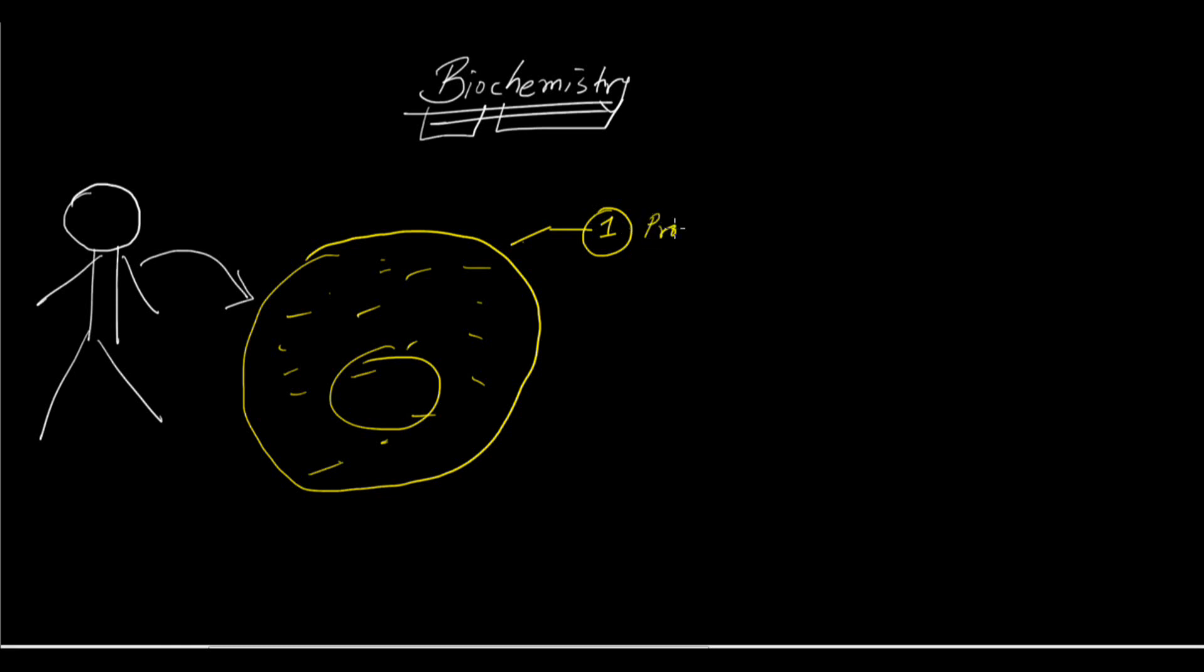But grossly all of the molecules are categorized into mainly four macromolecules. The first one is protein, second one is lipid, third one is carbohydrate, and the fourth one is DNA.